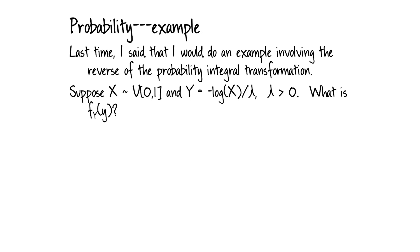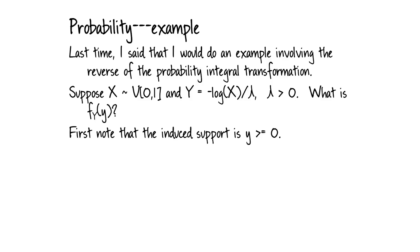Here is the example — there will be a connection to the probability integral transformation. Suppose we start with a random variable X that has a uniform distribution on the unit interval, and we have some function we want to use to transform X. What is the distribution of this transformed random variable? Note that the induced support of Y is just the non-negative real values.